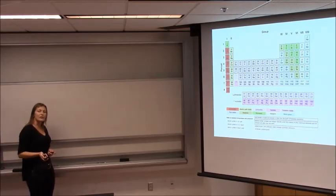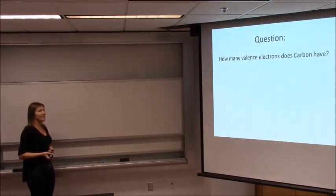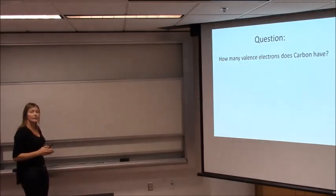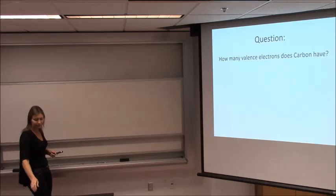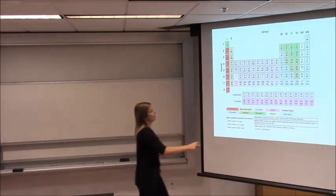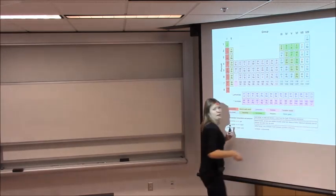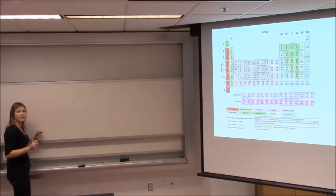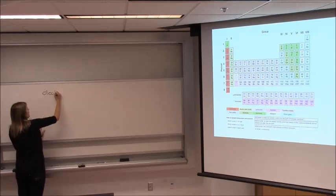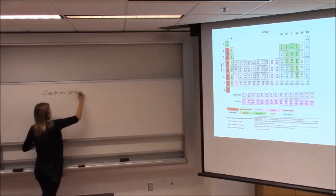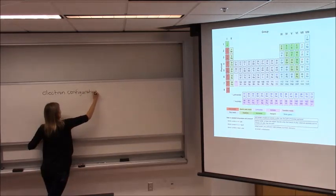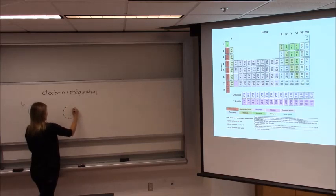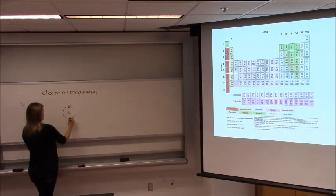Just a couple of quick review questions before we move on to bonds. How many valence electrons does carbon have? To answer that, you can either look and see that carbon is in column four, and if you're in column four you're going to have four electrons in the outer shell. But let's draw carbon's full electron configuration just to check. When we show where the electrons are located, it's called the electron configuration. Carbon's atomic number is six.